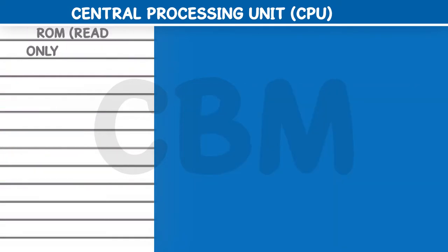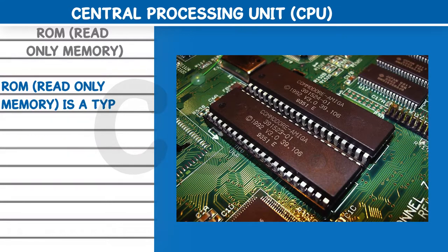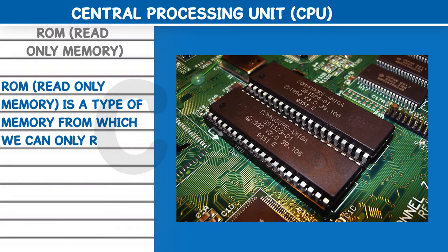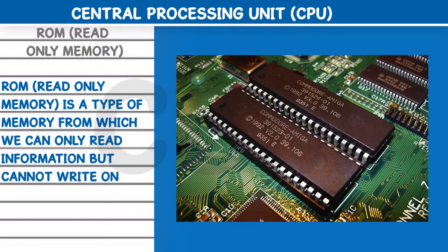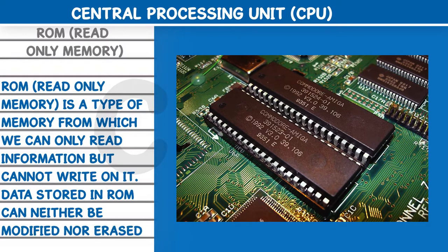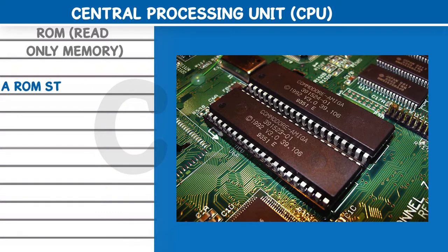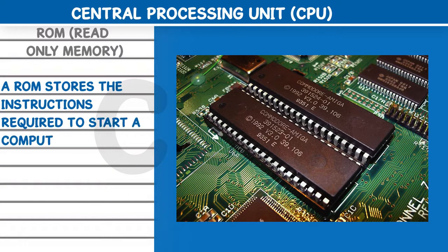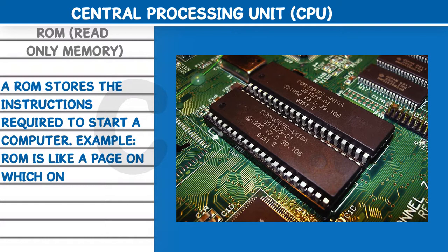ROM or read-only memory is a type of memory from which we can only read information but cannot write on it. Data stored in ROM can neither be modified nor erased. A ROM stores the instructions required to start a computer. ROM is like a page on which, once written by a pen, the contents cannot be changed.